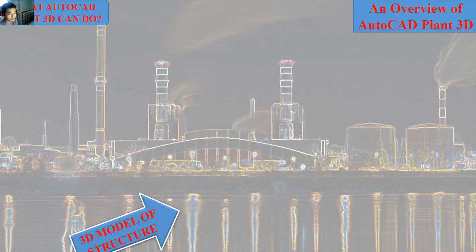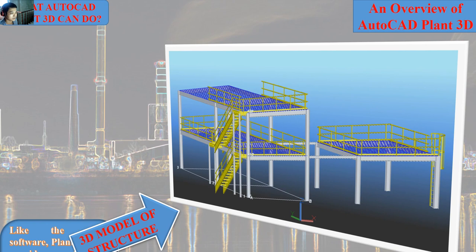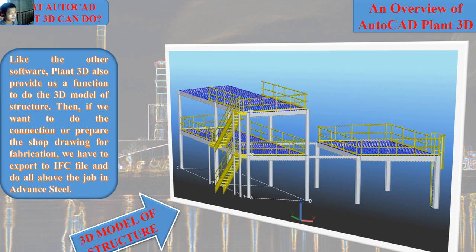Number two is preparing the 3D model of the structure. Like ISO software, Plant 3D also provides a function to do the 3D model of steel structure. However, in Plant 3D we cannot do the connections, detail drawings, or erection drawings like in Advanced Steel. If you want to do the detail drawing and erection drawing, you have to export from Plant 3D to Advanced Steel and do all the work there.